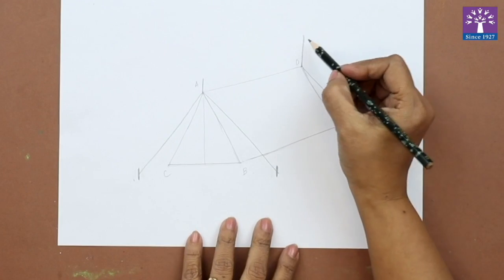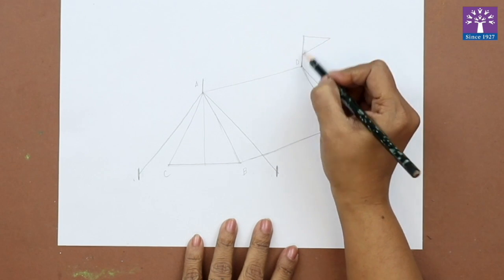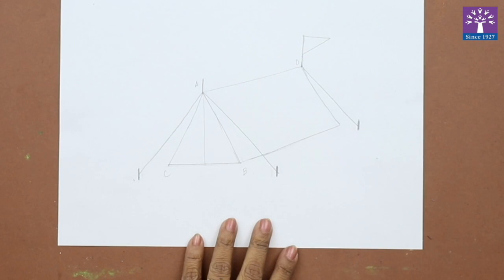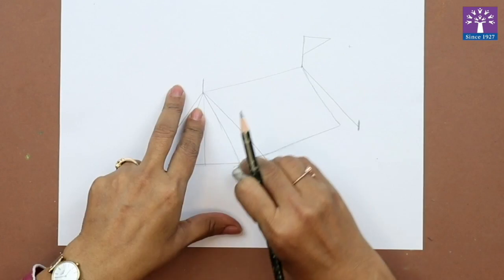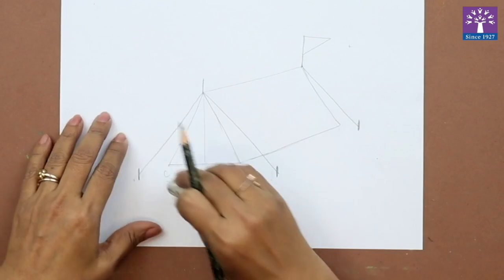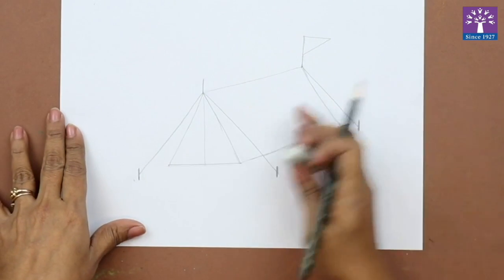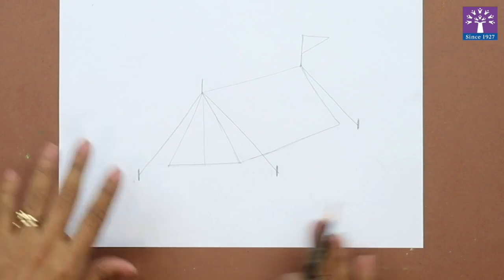Draw a small triangular flag on this line at point D. Now you can erase all the letters that we have written. These letters were written just as a guideline so that we can understand. Our camping tent is now ready. Now we'll draw a background.